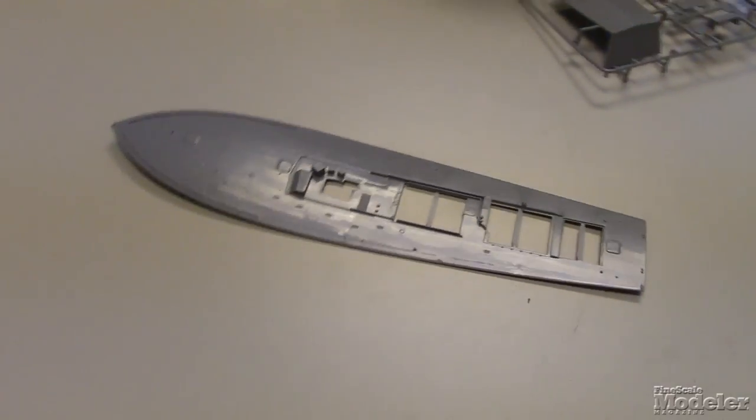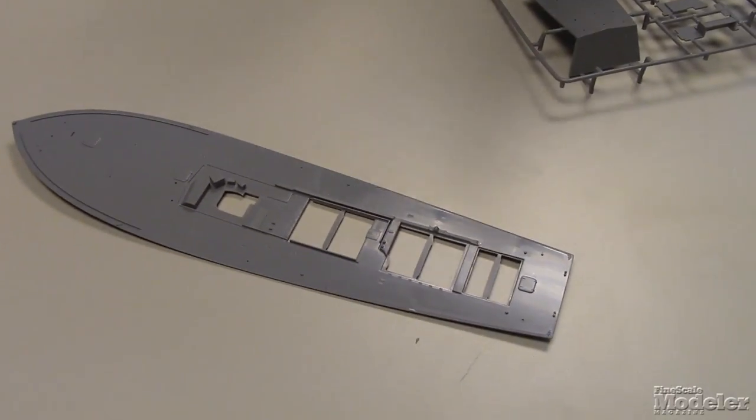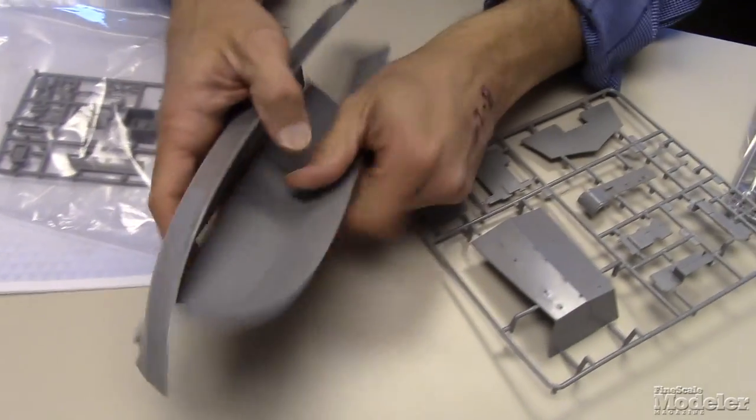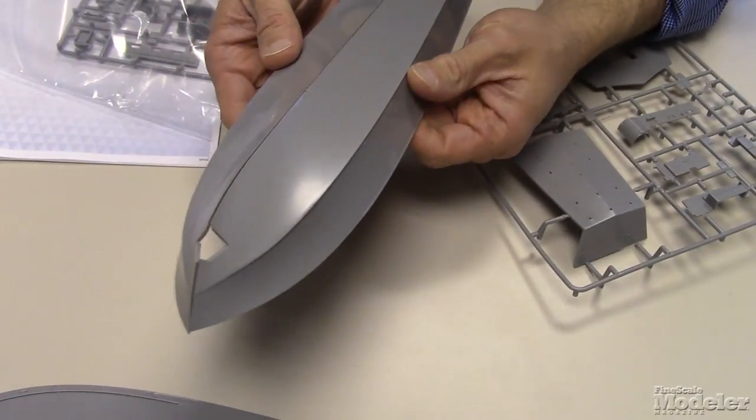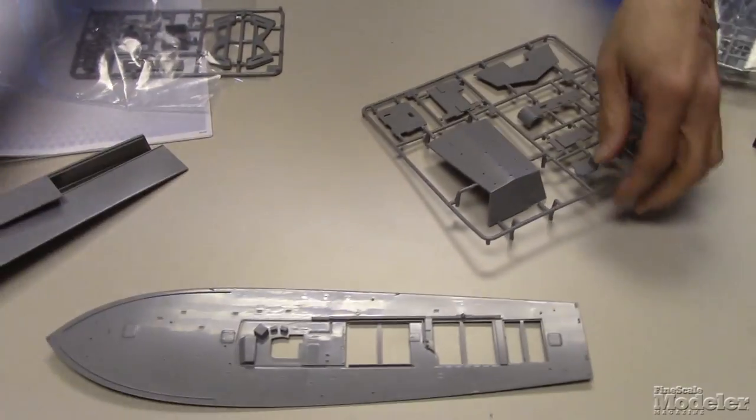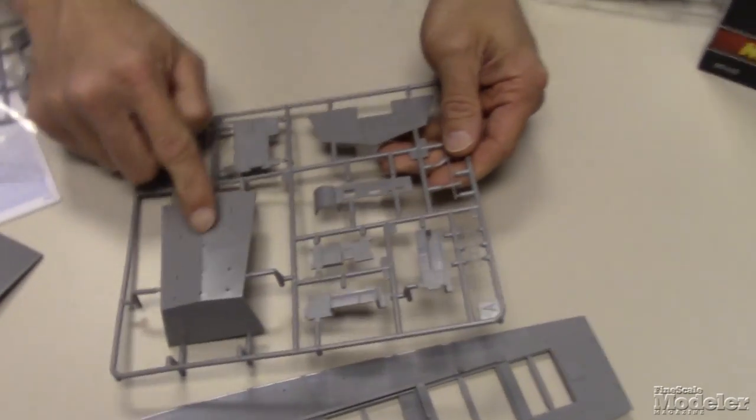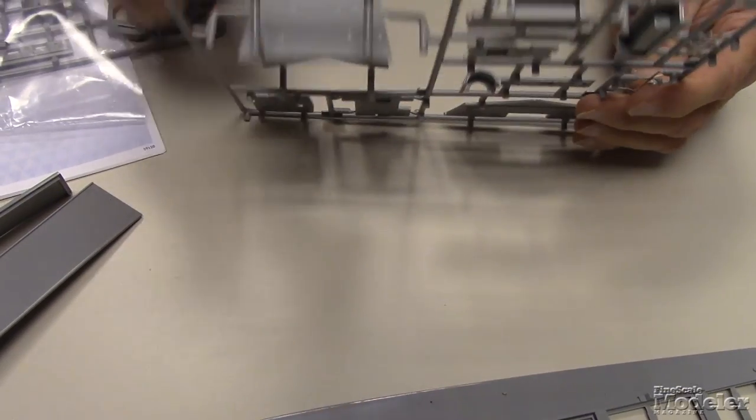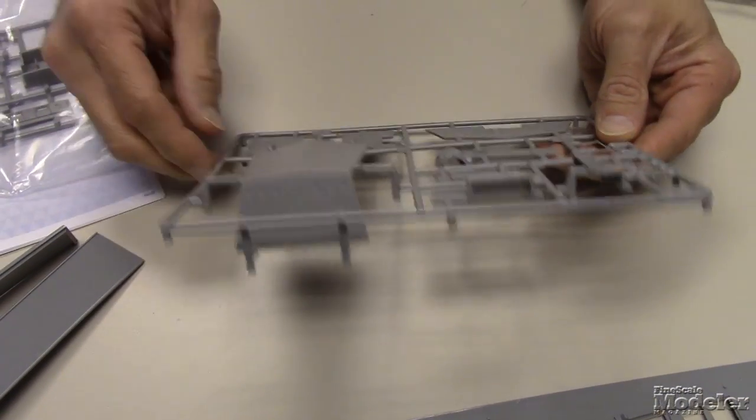The hull actually comes in halves. It's pretty basic. These are very simple boats to begin with. The rear section with the mounts for the running gear is a separate piece with the exhausts on the back.